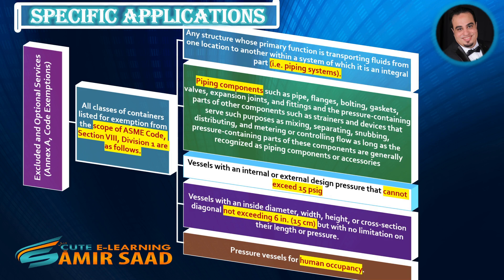Further exclusions include: vessels with an internal or external design pressure that cannot exceed 15 PSIG; vessels with an inside diameter, width, height, or cross-section diagonal not exceeding 6 inches, but with no limitation on their length or pressure; and pressure vessels for human occupancy.